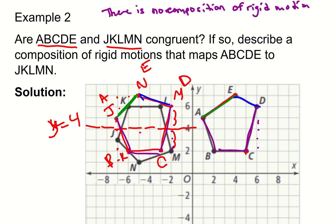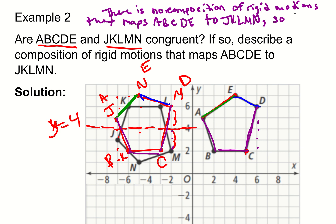So there is no composition of rigid motions that maps ABCDE to JKLMN, and therefore the figures are not congruent. Because the side lengths are different, that also indicates they're not congruent — but we're discussing this purely in the language of rigid motions for this lesson.